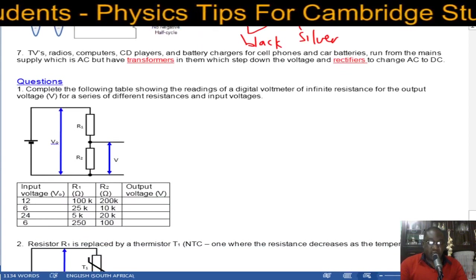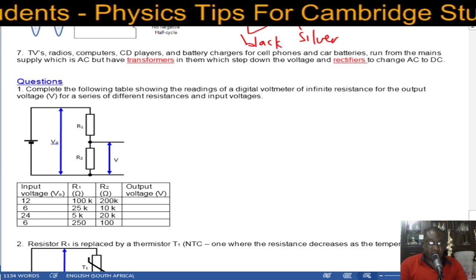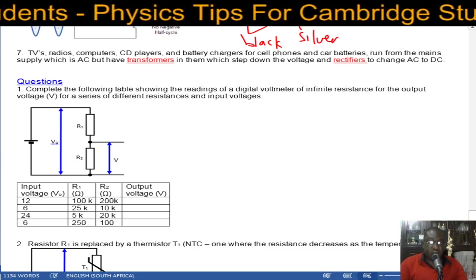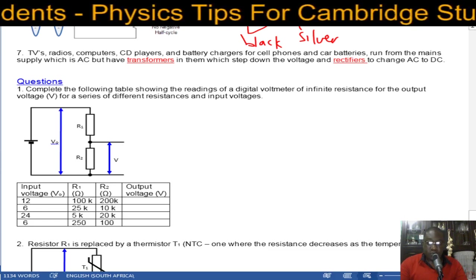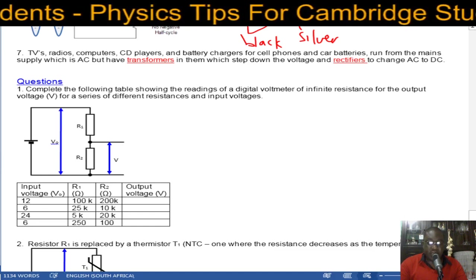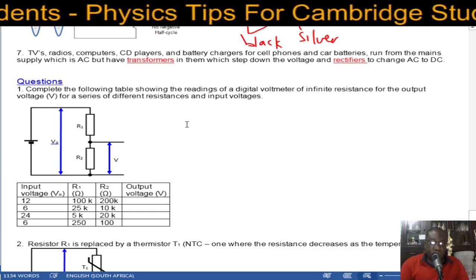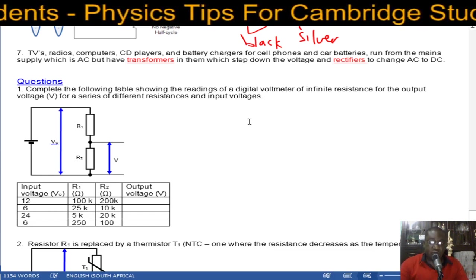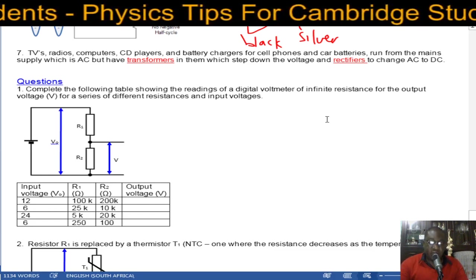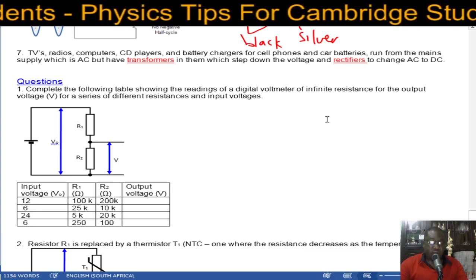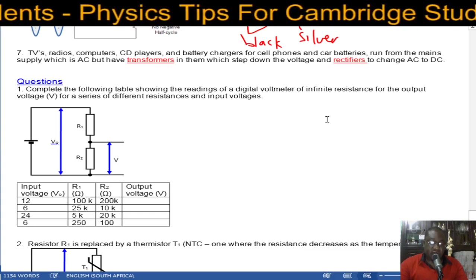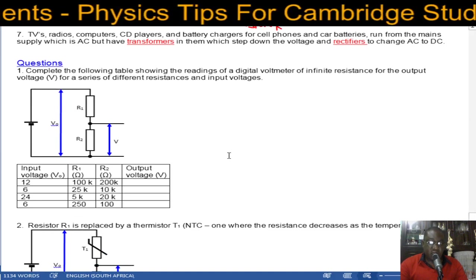Now let's end the video by looking at questions. These questions relate to action and use of circuit components. The first question says complete the following table showing the readings of a digital voltmeter of infinite resistance for the output voltage for a series of different resistances and input voltages.